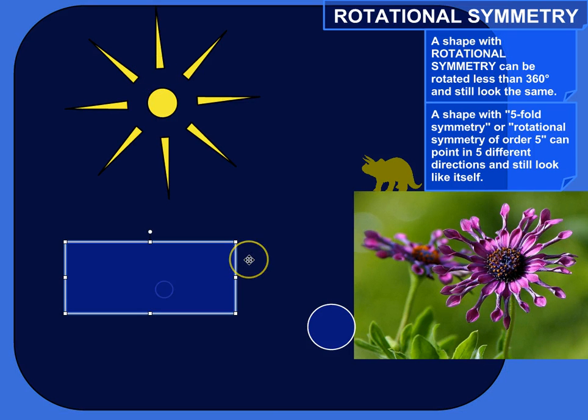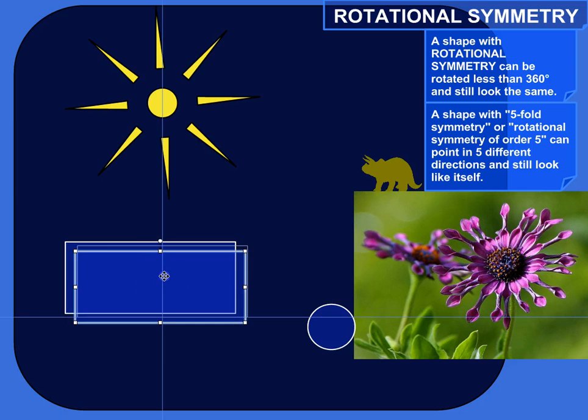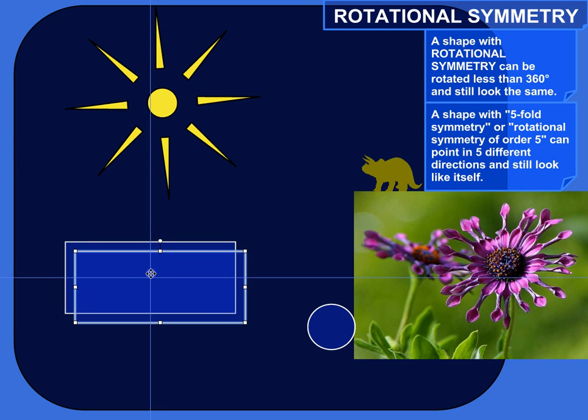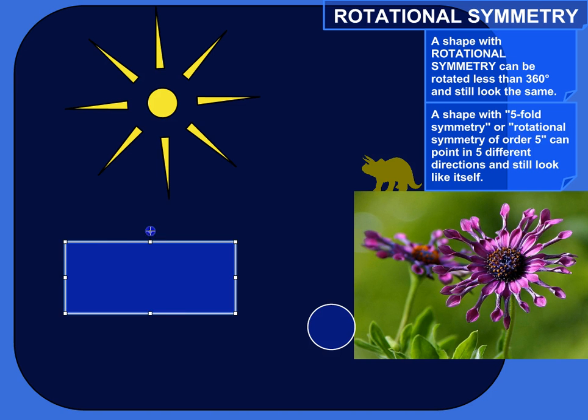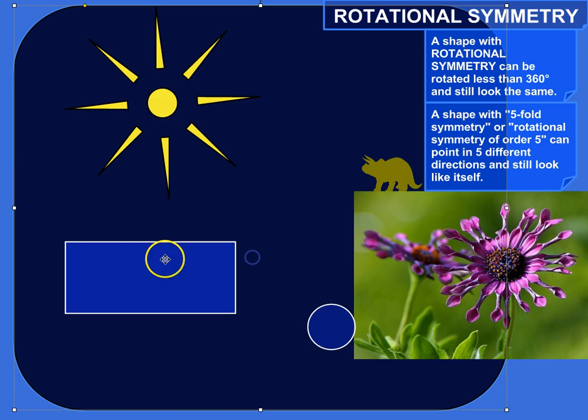So what about this rectangle? All rectangles have two-fold rotational symmetry. Because, look, I can just, boom, 180 degree rotation, and it looks exactly like the way I started.